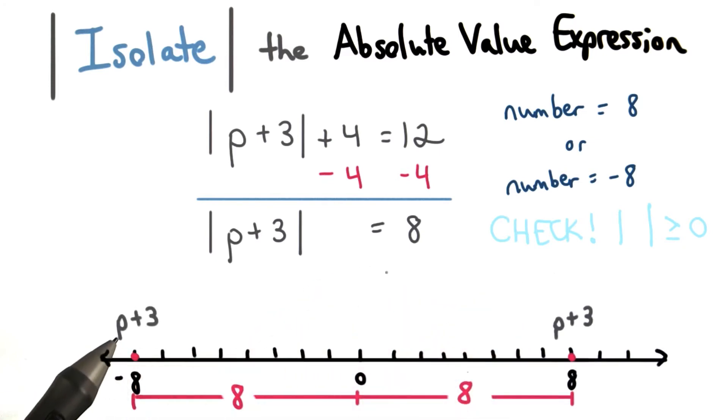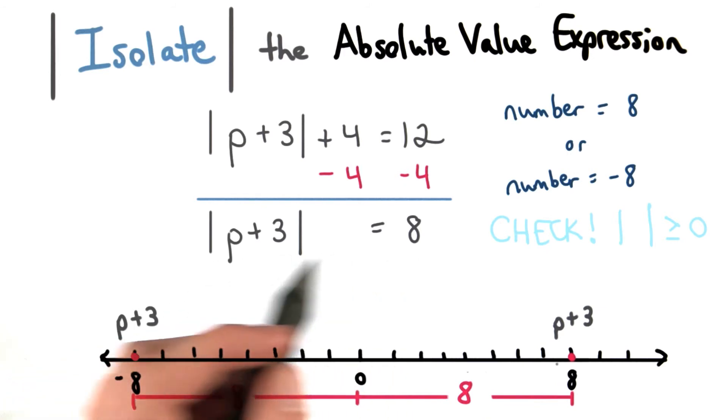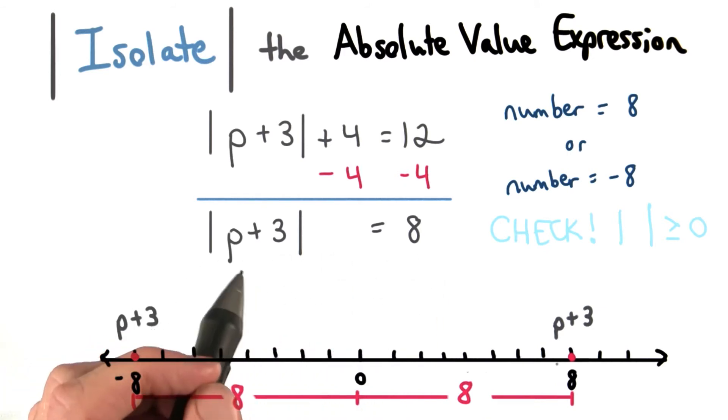So now we're back into the same case before. The value of p plus 3 could be 8 units to the left of 0 at negative 8, or it could be 8 units to the right of 0 at positive 8. So let's split this equation up into two equations. Setting p plus 3 equal to negative 8, and p plus 3 equal to positive 8, just like from before.